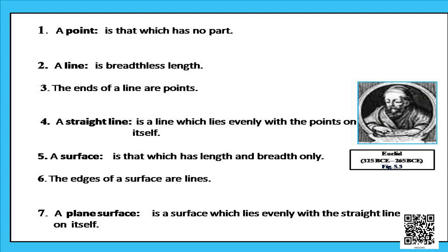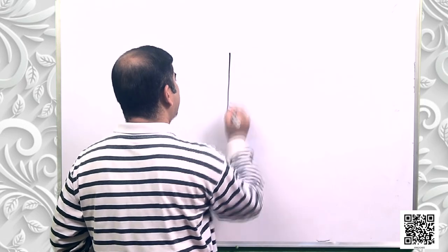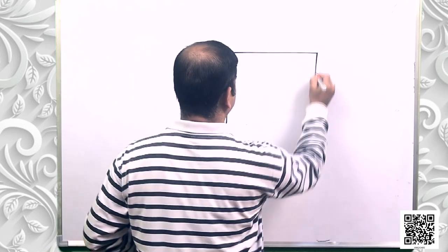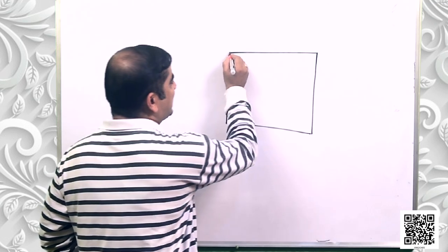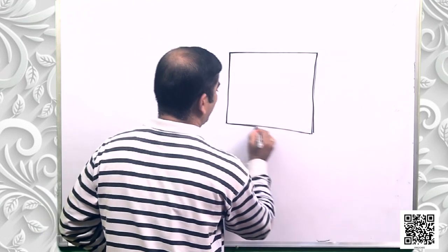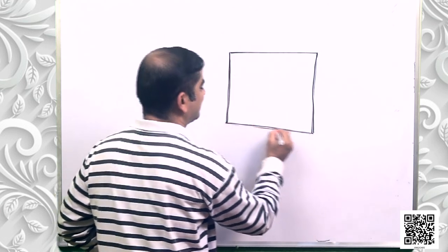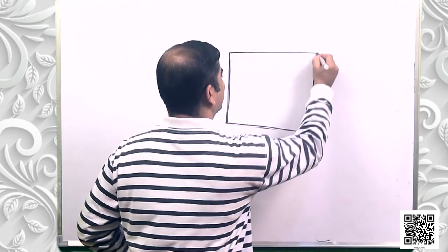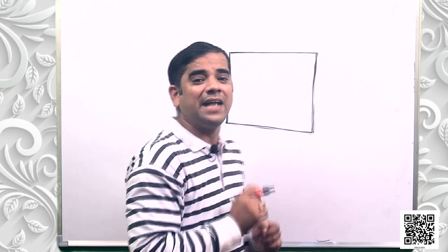The seventh definition says that a plane surface is a surface which lies evenly with the straight lines on itself. That means the lines lie evenly on the plane and are not going anywhere else — that is why it is called a plane surface.